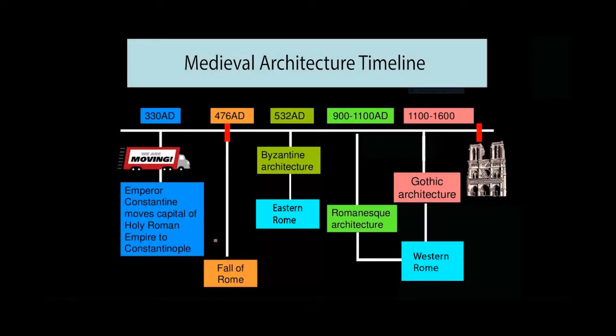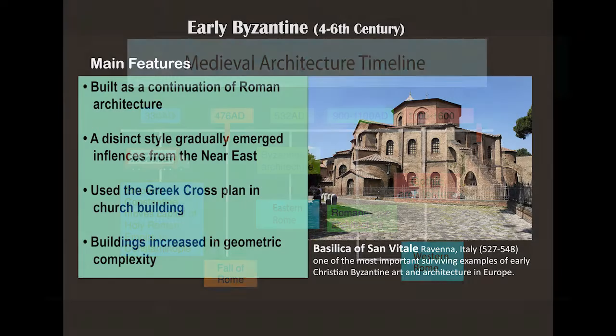The architecture of Eastern Europe was more developed compared to Western Europe, retaining the construction technology of the dome. The Orthodox Church proclaimed that believers are more intimate, and the centrally constructed architecture of the dome is suitable for the doctrine. Therefore, this kind of building was gradually increasing in use, called the Byzantine architecture.